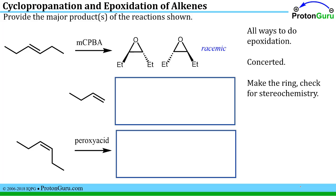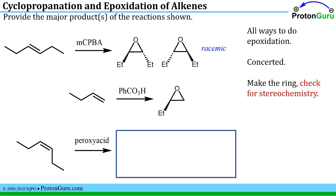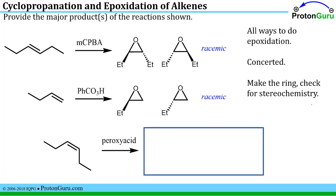Moving to the next problem — on scratch paper we draw the epoxide, notice we get a stereocenter, and draw one enantiomer first with the ethyl group pointed forward. Because the starting material is achiral, we must also have an equal amount of the other enantiomer. So we get a racemic mixture.